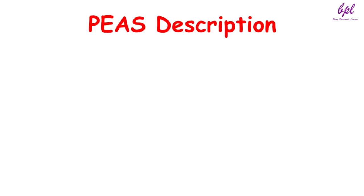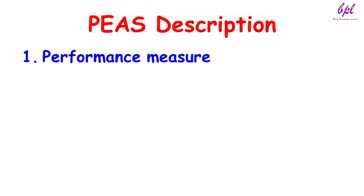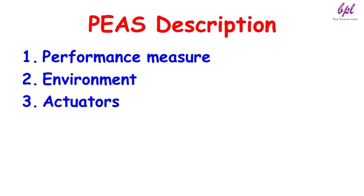Now let us see the PEAS description. The PEAS description describes the complete problem. For that we describe performance measure, environment, actuators, and sensors. Now we will describe all these for the Wumpus World.